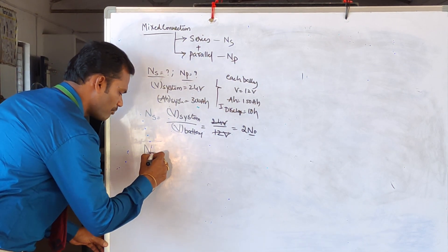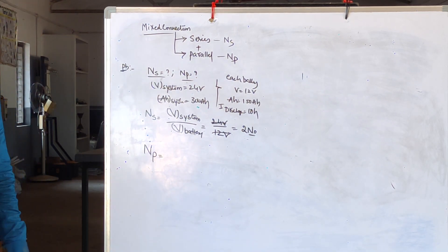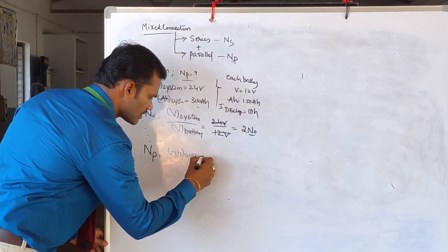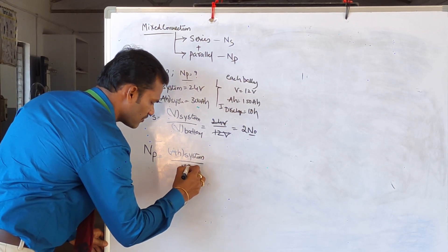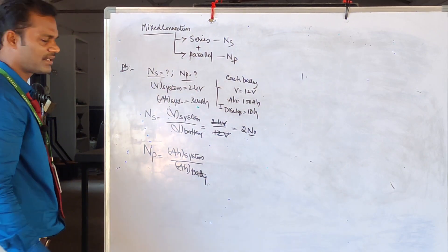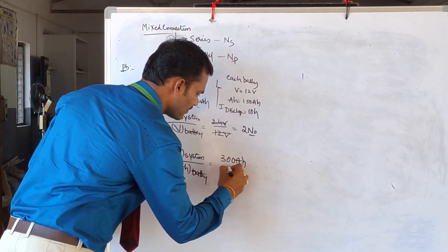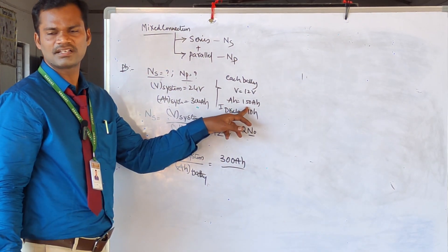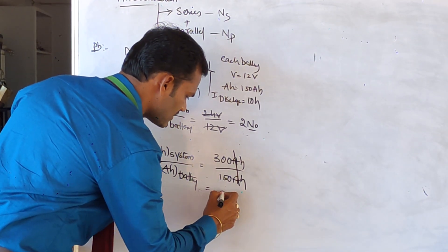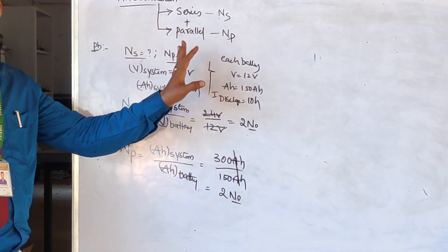Next, we need to calculate the number of batteries to be connected in parallel connection. In a parallel connection, AH capacity is increased. The formula is: AH capacity of the system divided by AH capacity of the individual battery. That is 300 AH divided by 150 AH — the AH units cancel, giving us 2 batteries to be connected in parallel.